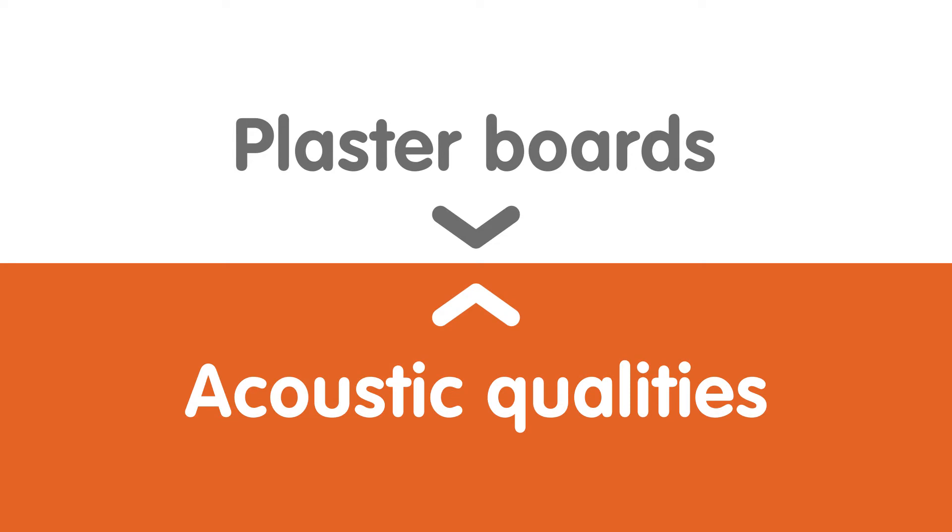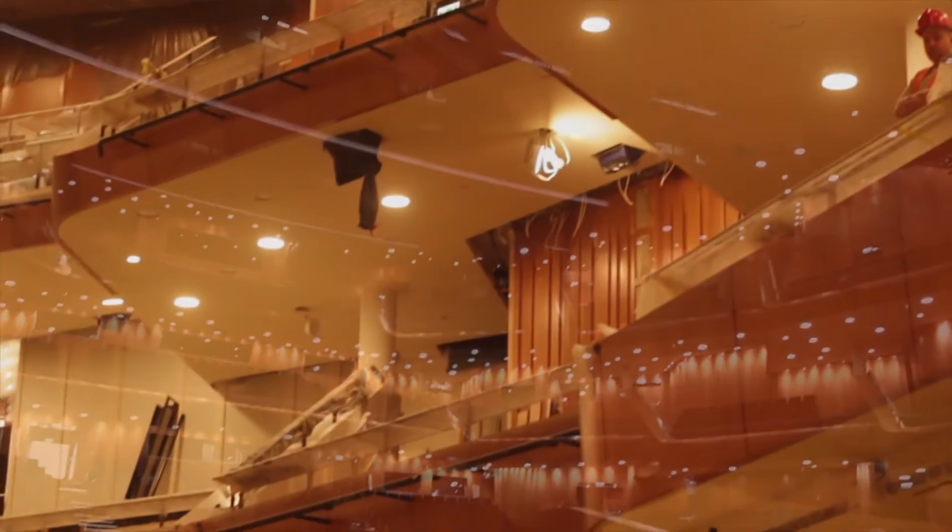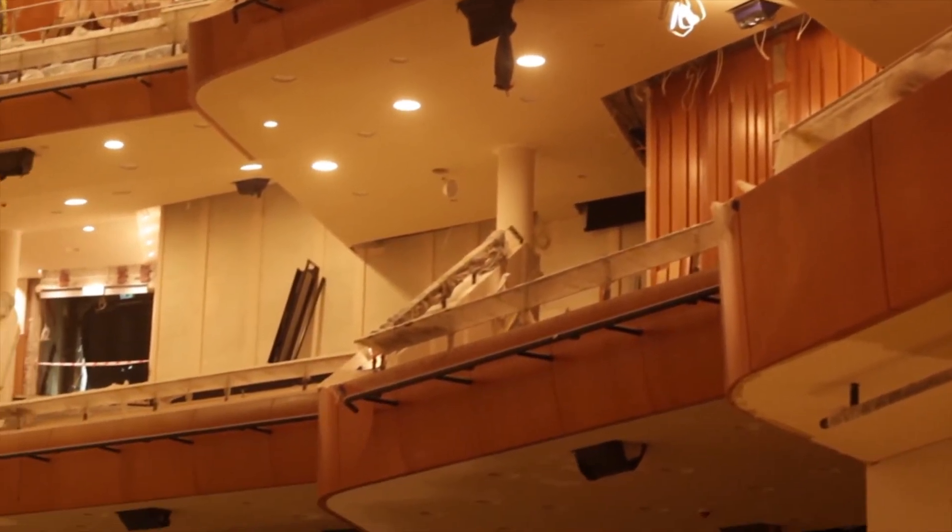But why did the ICE Congress Centre developers ask Etex for so many of its Cineat plasterboards? That's easy: to have the right kind of product features to guarantee the best acoustics in the halls. In the concert hall, even the tiniest interior elements can influence a room's acoustics.